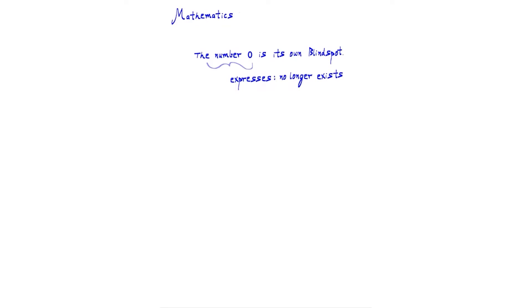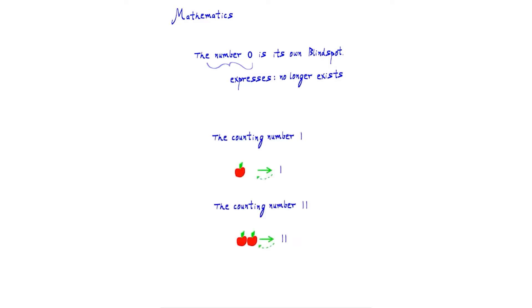In mathematics, the number zero — whose symbolic expression is a blind spot to itself — is supposed to represent something that does not exist. The very fact that we can write it and express it out no longer leaves it as something that does not exist. Hence it is its own blind spot. Another counting number, say one, is a representation of an object which exists. Saying 'one apple,' we may trace back the apple being represented by the number one. Similarly for two.